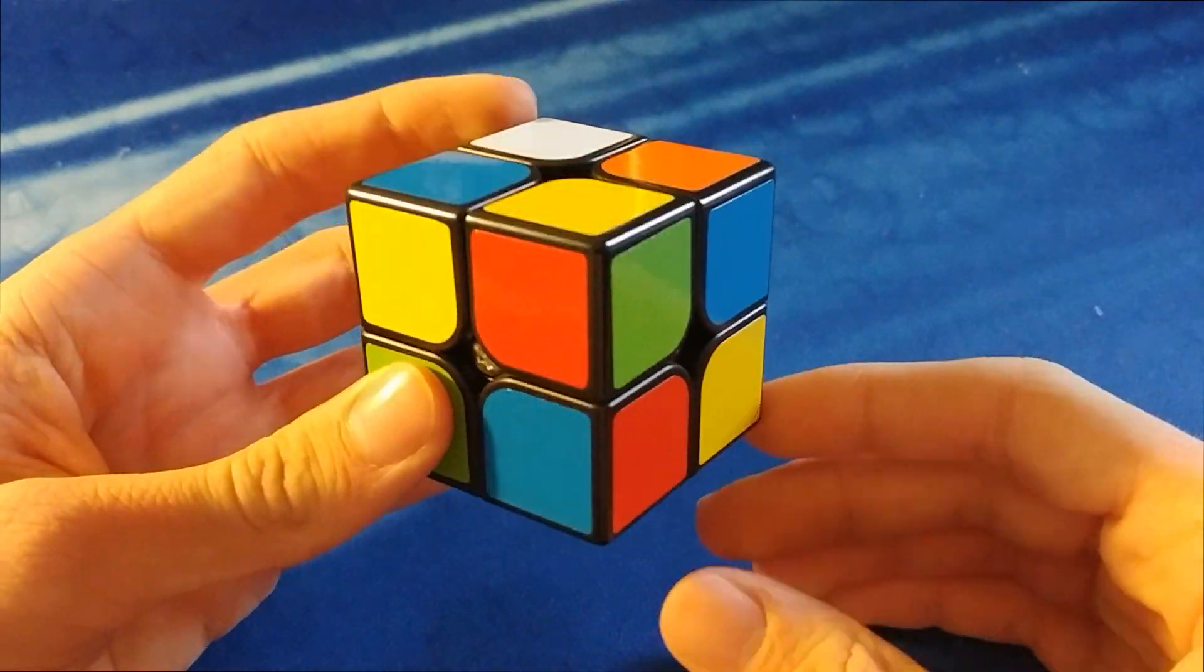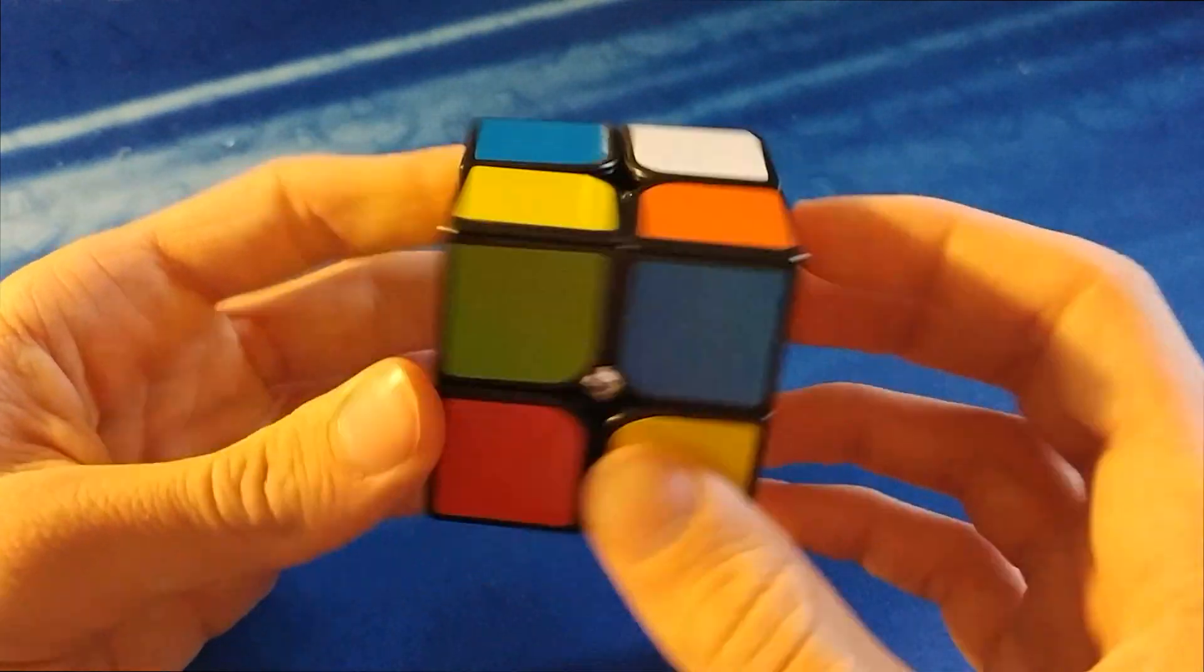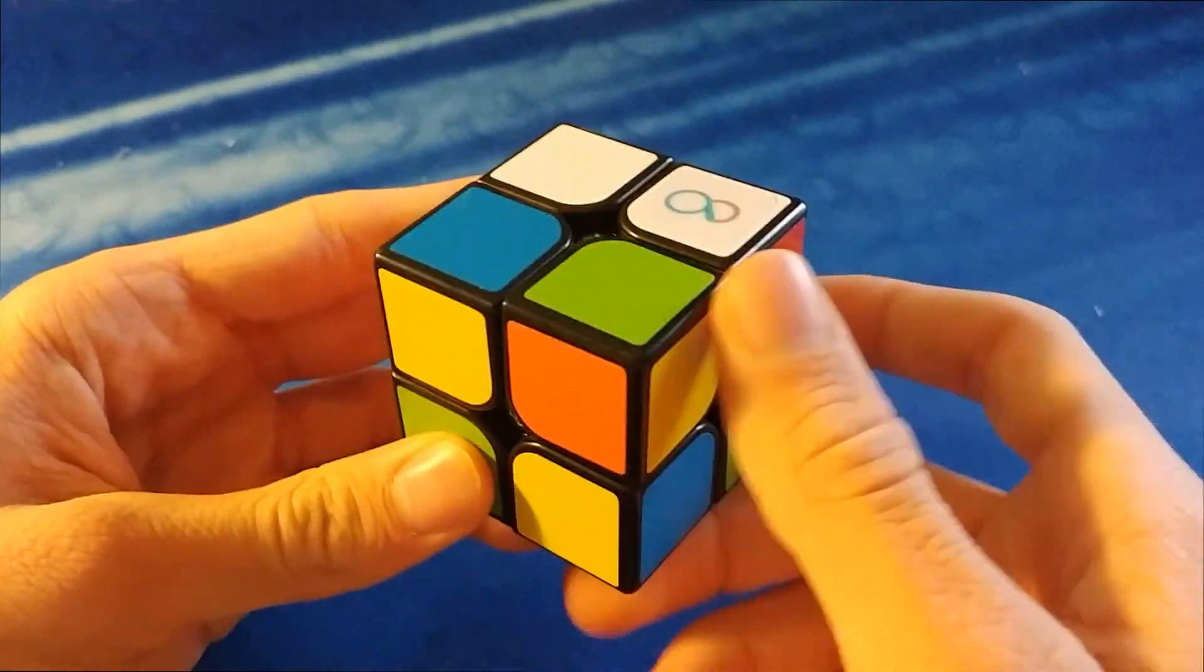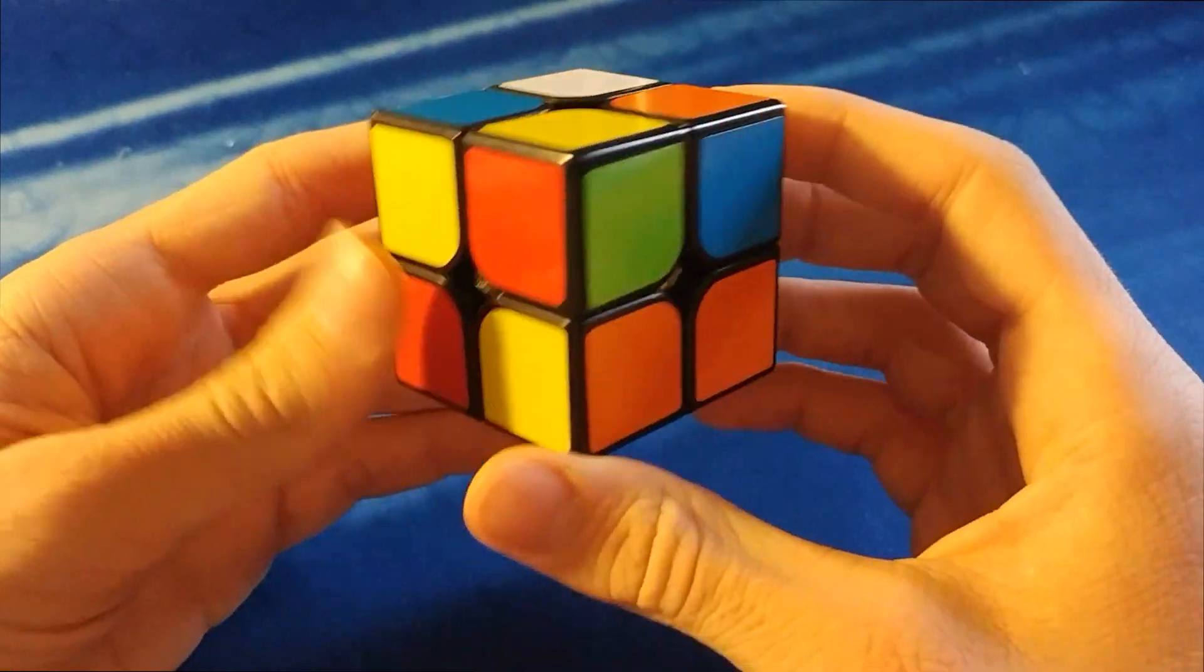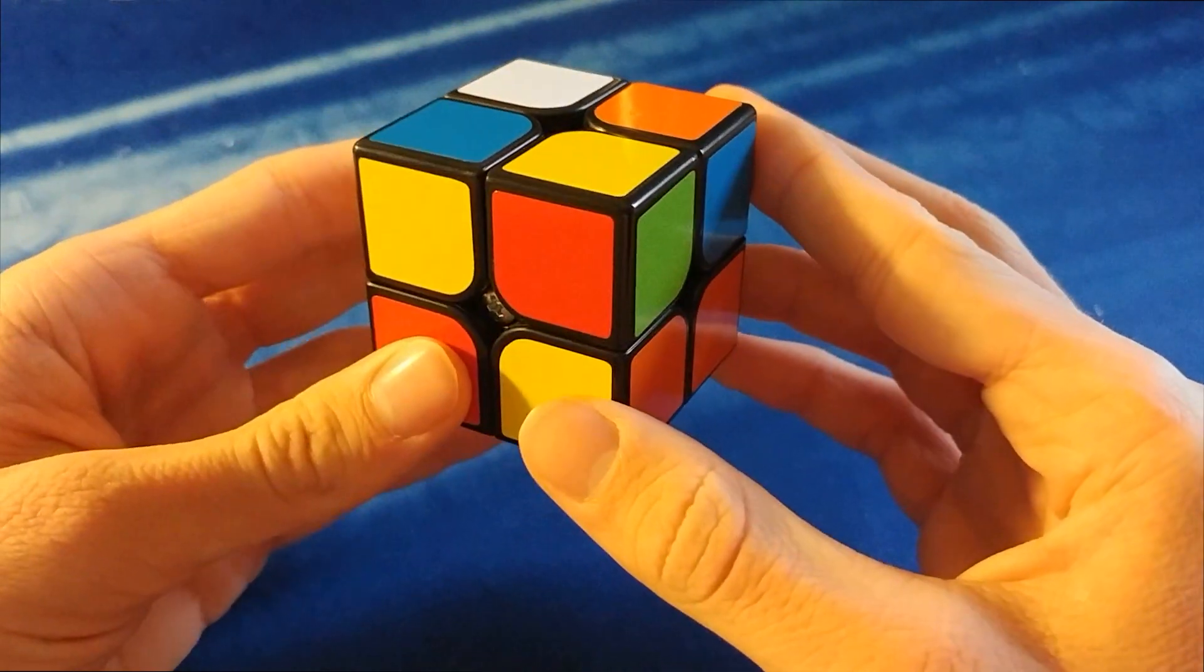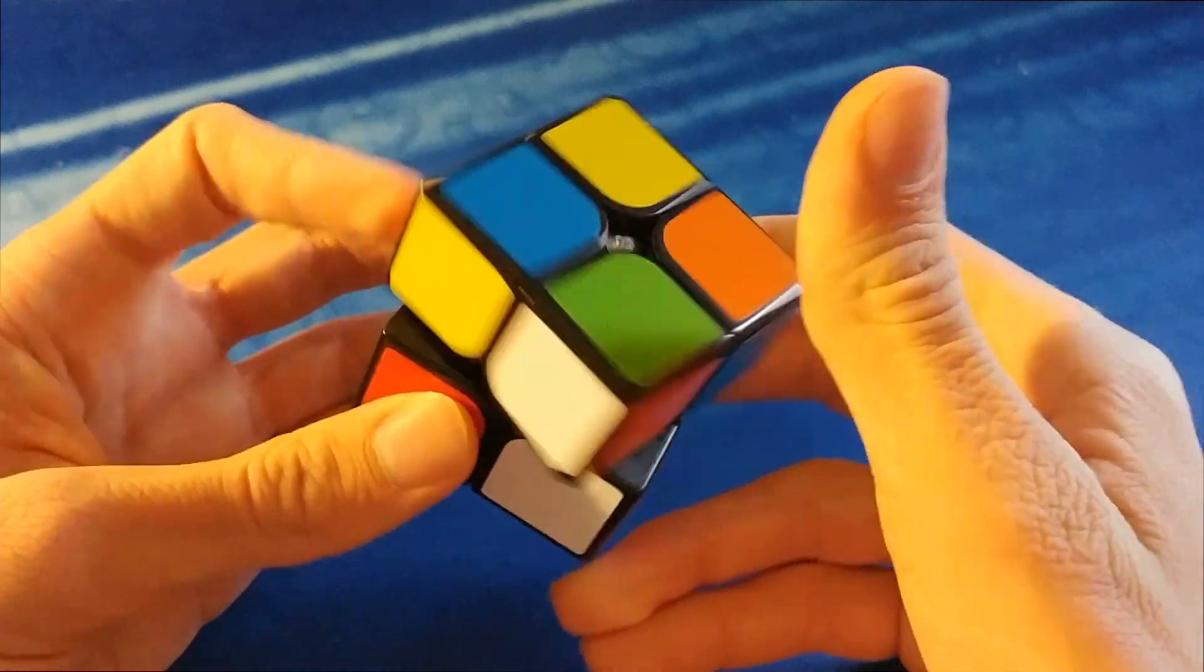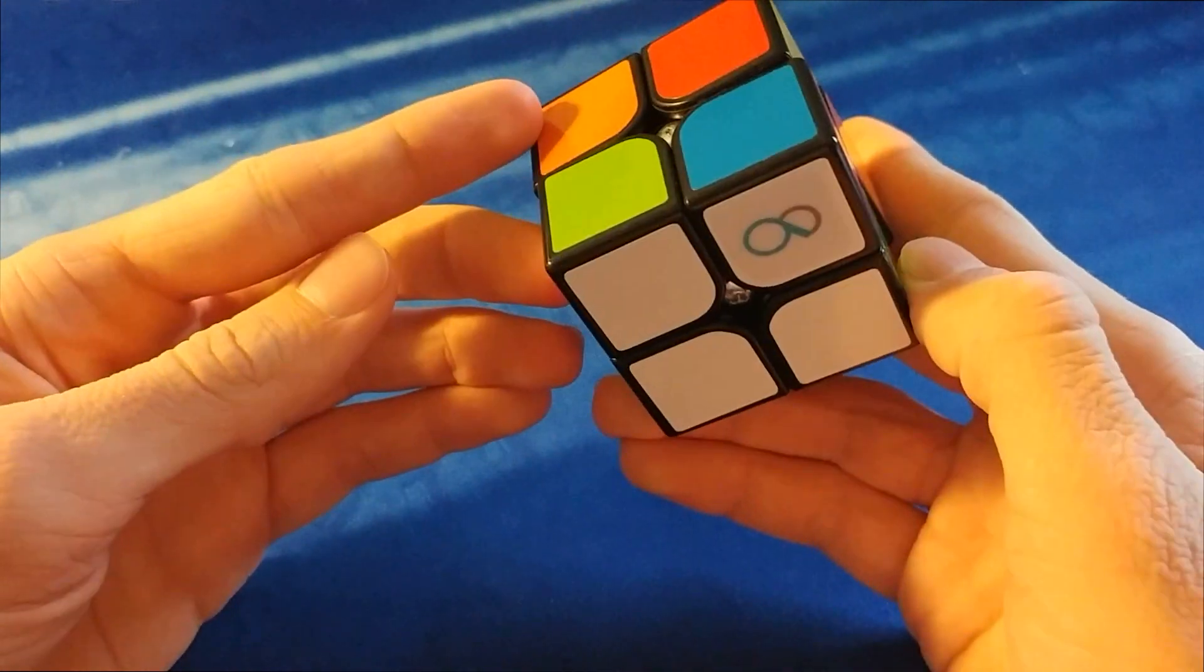So, you know, instead of having a six move solution to insert this, I can do one, two, three. Otherwise I have to do something like one, two, three, four, five, six, seven, eight, which isn't as effective.